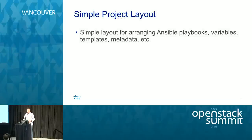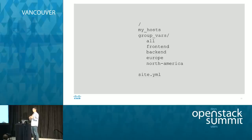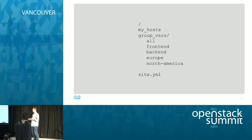Ansible is very flexible — you can lay out your project in many different ways. In a simple layout, you have the inventory file at the top, a set of group variable YAML files that contain structured variables used to render templates, and then site.yaml as the top-level entry point. The nice thing about group variables is they're automatically associated with the name of a group, so variables in the front-end file are used when running against a server that's in the front-end group.